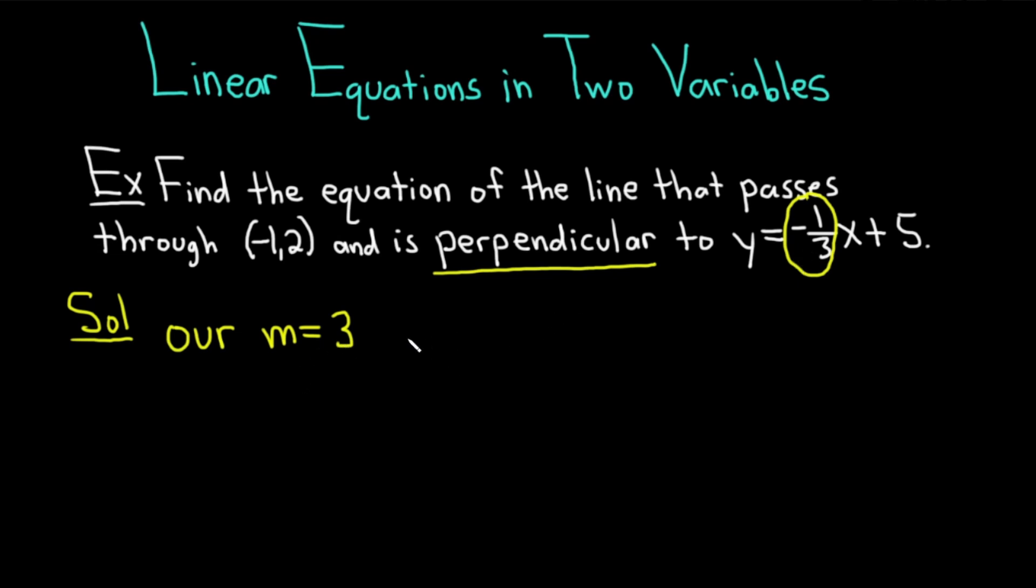Now we have our slope. We also have our point, which I'll label as x₁, y₁. We can use the point-slope formula for a line, which says that y - y₁ = m(x - x₁). It's really a good idea to write these down every time you do one of these problems so you end up memorizing it.